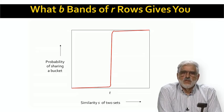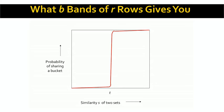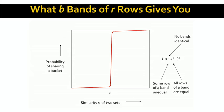We derive the function relating the probability of two sets' signatures becoming a candidate pair to similarity S. If the sets have Jaccard similarity S, the probability their signatures are identical in all R rows of one band is S to the R. The probability they are not equal in that band is 1 minus S^R. The probability they are unequal in each of the B bands is (1 minus S^R) raised to the Bth power. The probability they agree in at least one band is 1 minus (1 minus S^R)^B. As B and R get large, this function increasingly resembles a step function, and the threshold at which the rise occurs is approximately (1/B)^(1/R).